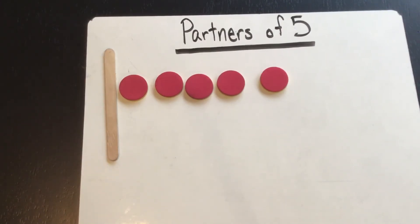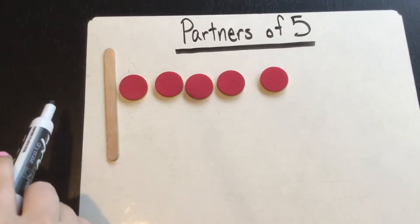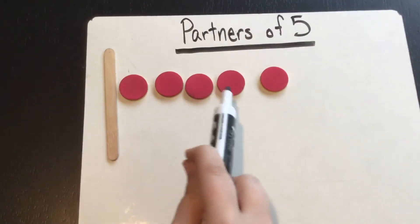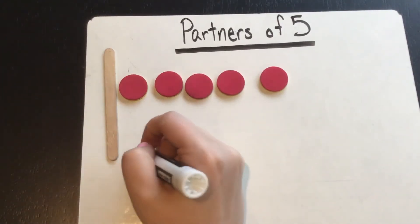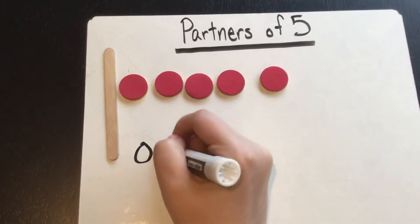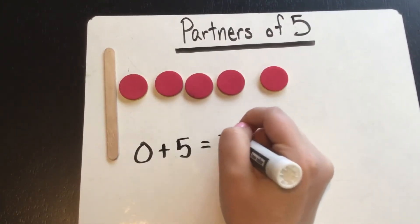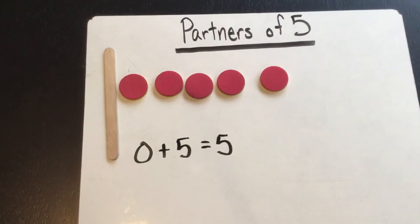If it's like this, we have zero over here and one, two, three, four, five over here. So the partners would be zero and five and we can make that into an equation: zero plus five equals five. There are five all together.